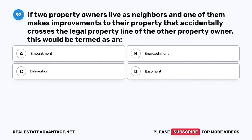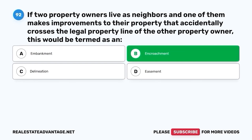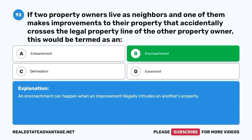Question 92. If two property owners live as neighbors and one of them makes improvements to their property that accidentally crosses the legal property line of the other property owner, this would be termed as an: A. Embankment. B. Encroachment. C. Delineation. D. Easement. The correct answer is B. Encroachment. An encroachment can happen when an improvement illegally intrudes on another's property.